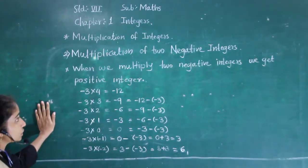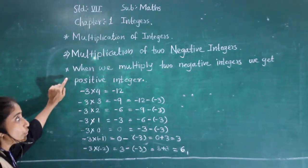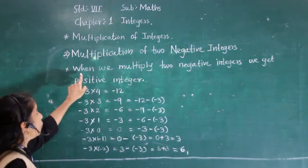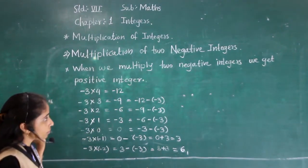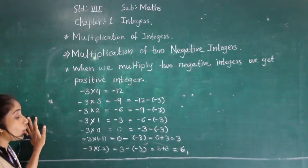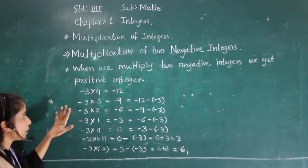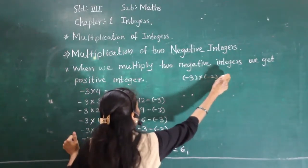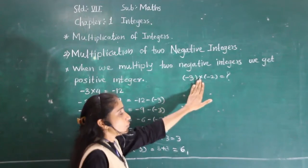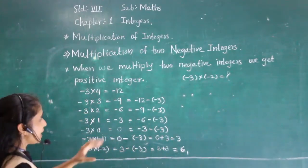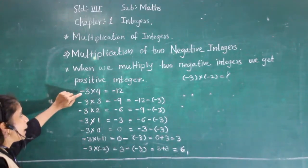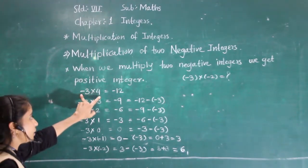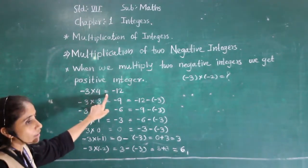Let us move to our next concept: multiplication of two negative integers. When we multiply two negative integers, we get a positive integer. Now I will explain this concept using a pattern. Suppose minus 3 into minus 2 — we will look at the number with negative integer and positive integer first.